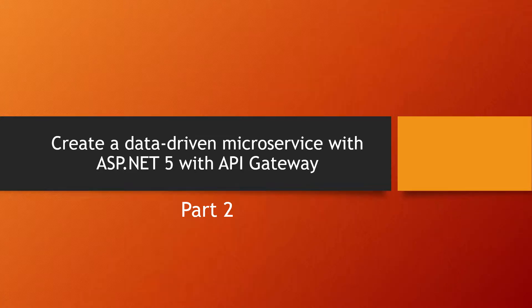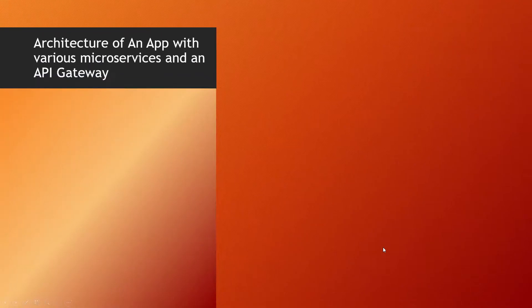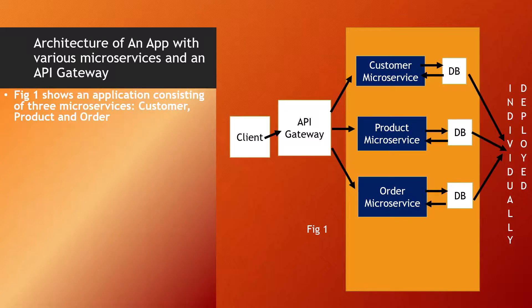Hello guys. Following my Part 1 of this playlist on microservices, where I showed you the basic introduction and concepts about microservices, let's do something new today in Part 2. I will be creating a data-driven microservice with ASP.NET 5 with an API gateway. What is going to be shown here is an architecture of an app with various microservices and an API gateway.